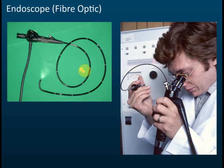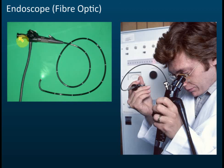The endoscope is another application of reflection of light. A doctor uses an endoscope which contains fiber optics inside along with a light source. One use is for doctors to examine the inner surface of your stomach — for example, to check for an ulcer. The device is inserted through your mouth, down your throat, and into your stomach. The doctor can then see and take pictures of the conditions inside your stomach.